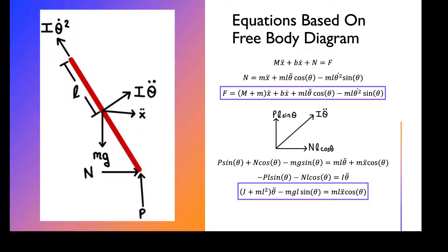From that diagram, we get our first equation: M times X double dot plus B times X dot plus N equals F. Then we get what N equals, substitute that into the first equation, and we get our first equation that we will be using throughout the rest of this presentation.